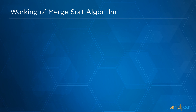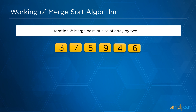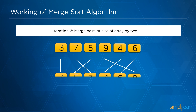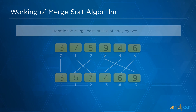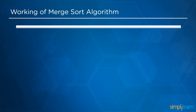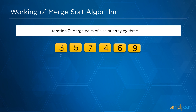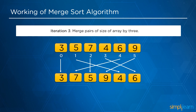In the next iteration, we merge pairs of array size 2. As a result, 3, 7 and 5 become 3, 5 and 7, and 9, 4 and 6 become 4, 6 and 9. In the last iteration, we merge pairs of array size 3, so that after sorting, 3, 5, 7, 4, 6 and 9 becomes the fully sorted array: 3, 4, 5, 6, 7 and 9.